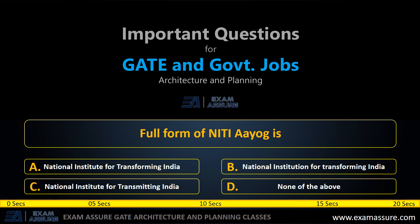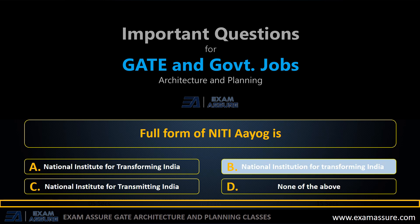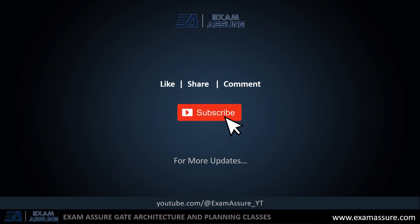Next question: The full form of NITI Aayog is — option A: National Institute for Transforming India, option B: National Institution for Transforming India, option C: (not stated), option D: None of the above. The correct answer is option B, National Institution for Transforming India. That's it for today, thanks for watching, stay tuned for more.